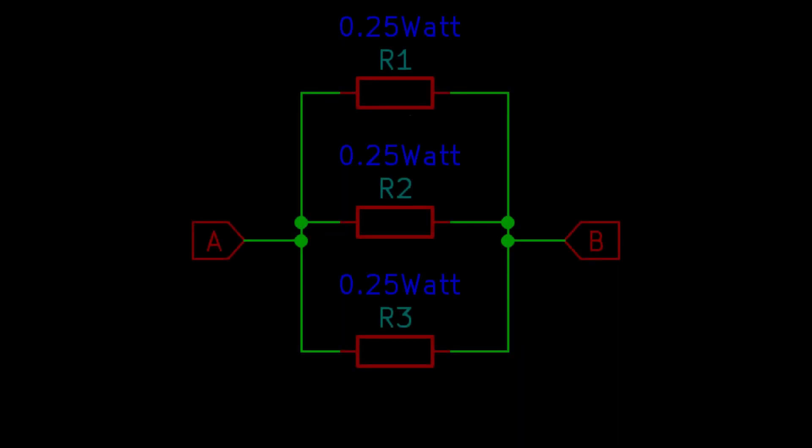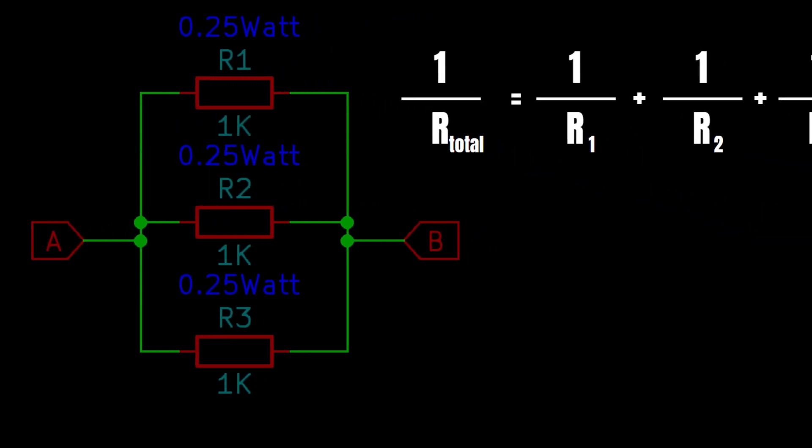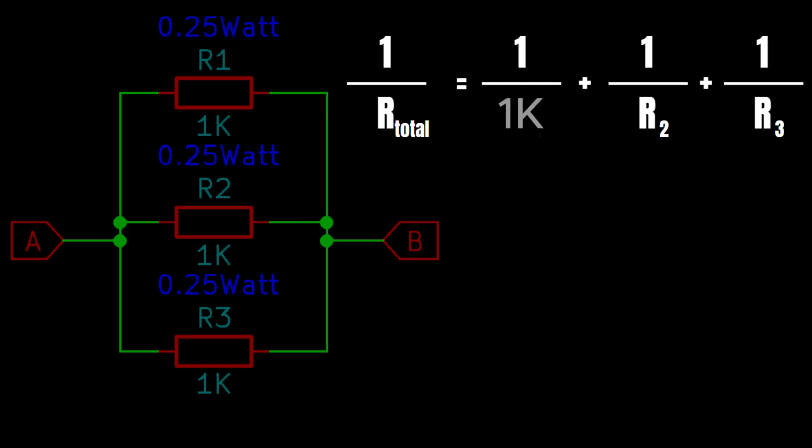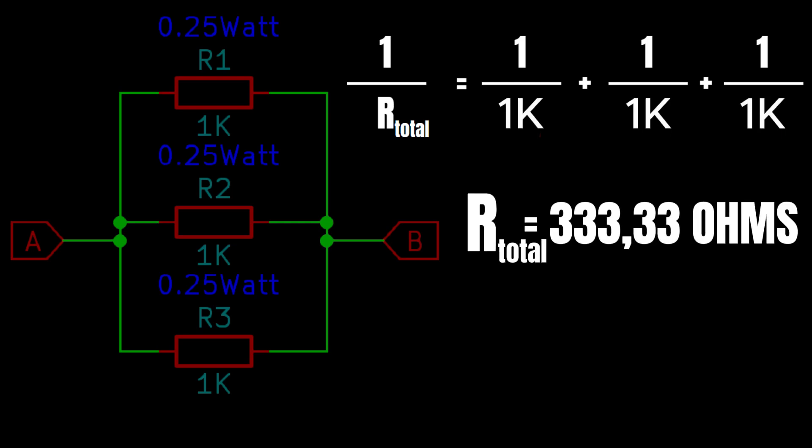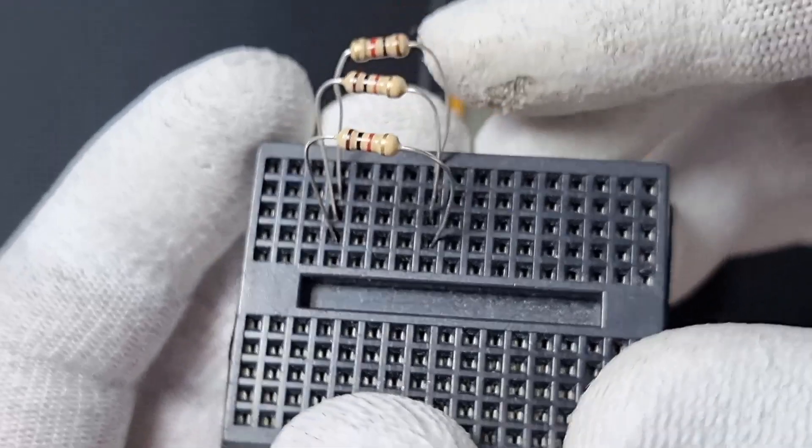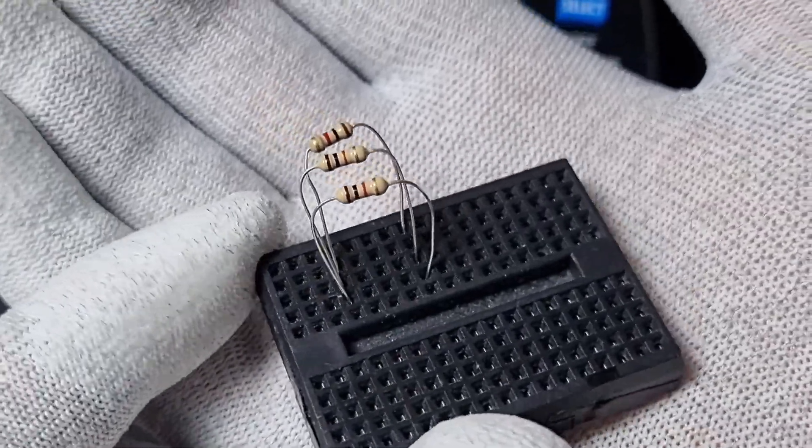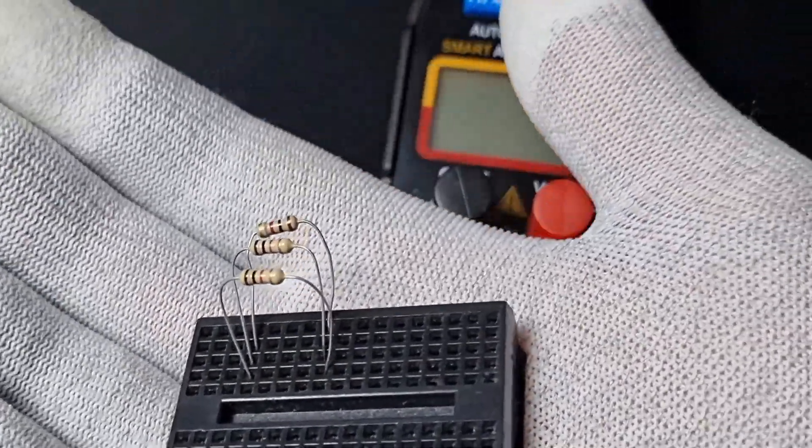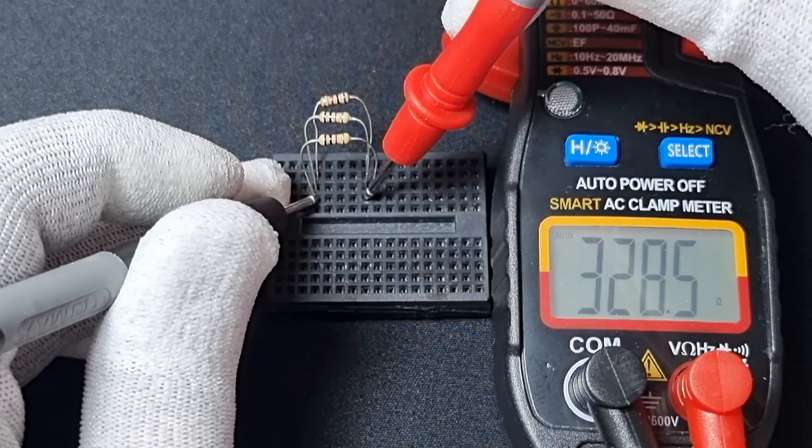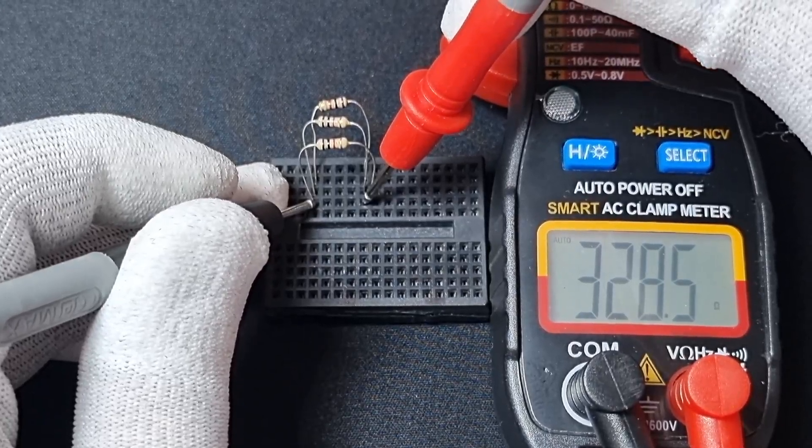What happens when we connect them in parallel? The total resistance decreases between these two points. Let's say we connected three 1 kilo ohm resistors in parallel. We can calculate the total resistance like this. The total resistance would be 333 ohms, but now the current is shared between the three resistors so they can collectively handle 0.75 watts of power dissipation.